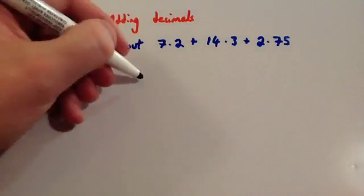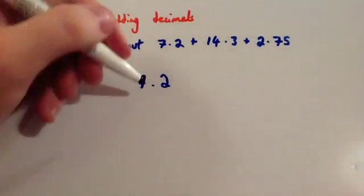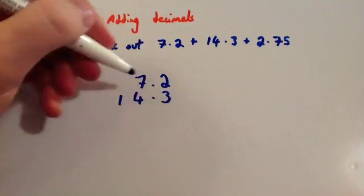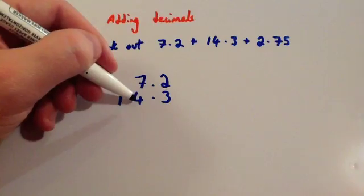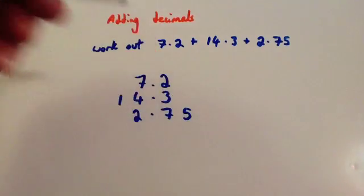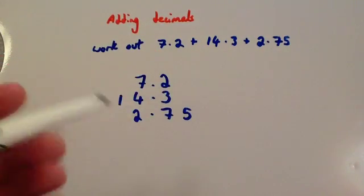So, 7.2, 14.3. Notice I've lined up the units, the 7 and the 4, and 2.75. Okay, notice that the decimal points are lined up.